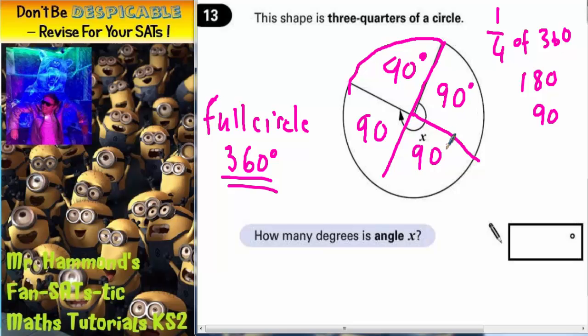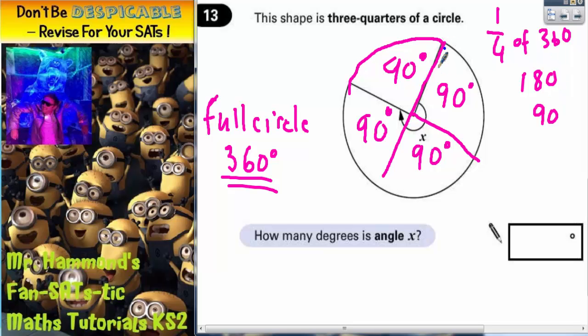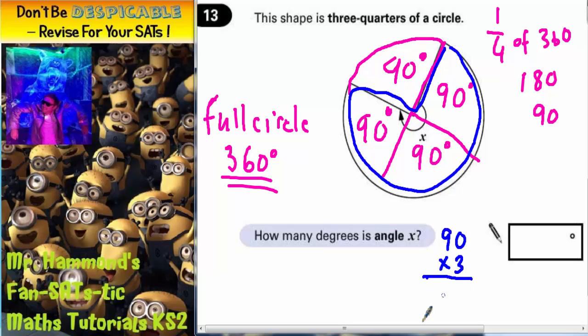So one quarter is 90 degrees. But it does say for our question, we've got 3 quarters. So we've got 3 lots of 90. So all we've got to do now is work out 90 times 3 and we'll get our answer.